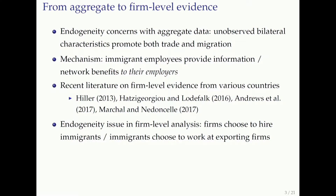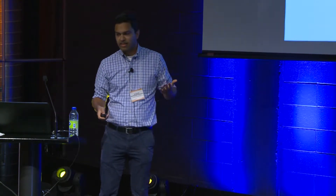We're going to go down to firm-level data and try to look for evidence of this trade creation effect at the firm level. Why go from aggregate to firm-level evidence? Two reasons: first, at the aggregate level there are endogeneity and causality concerns — similar factors promote both trade and migration between countries, making it difficult to sort out with aggregate data. Second, and more interestingly, looking at firm-level data helps us get at the mechanism. When people say immigrants facilitate trade, what they're thinking is that immigrants do this at their workplaces — they provide information to their employers. It's not just the presence of immigrants in an economy, it's that immigrants working at certain firms help their employers export.